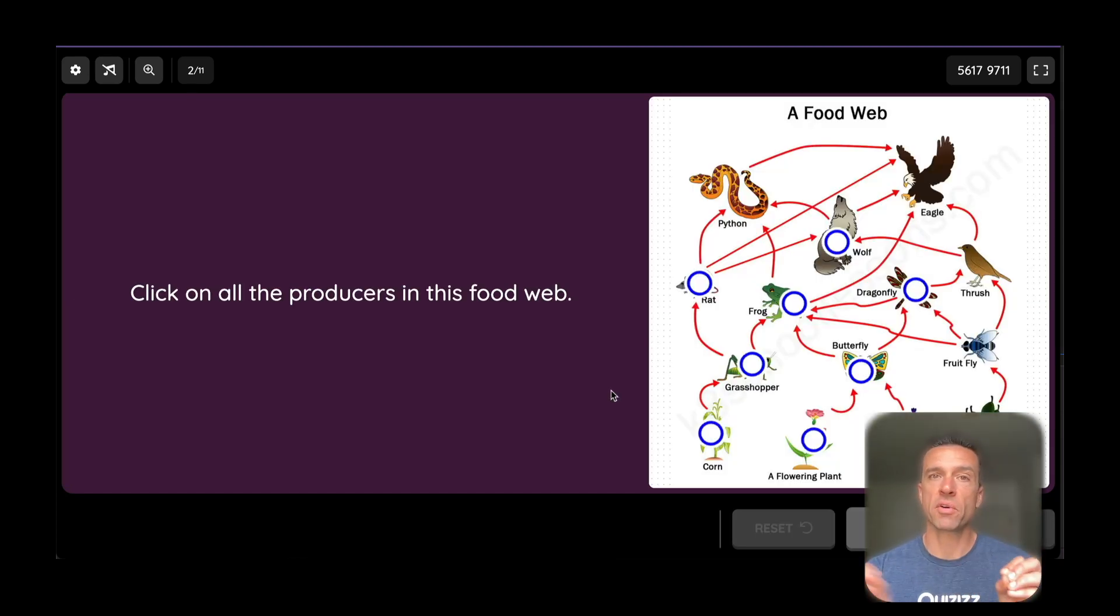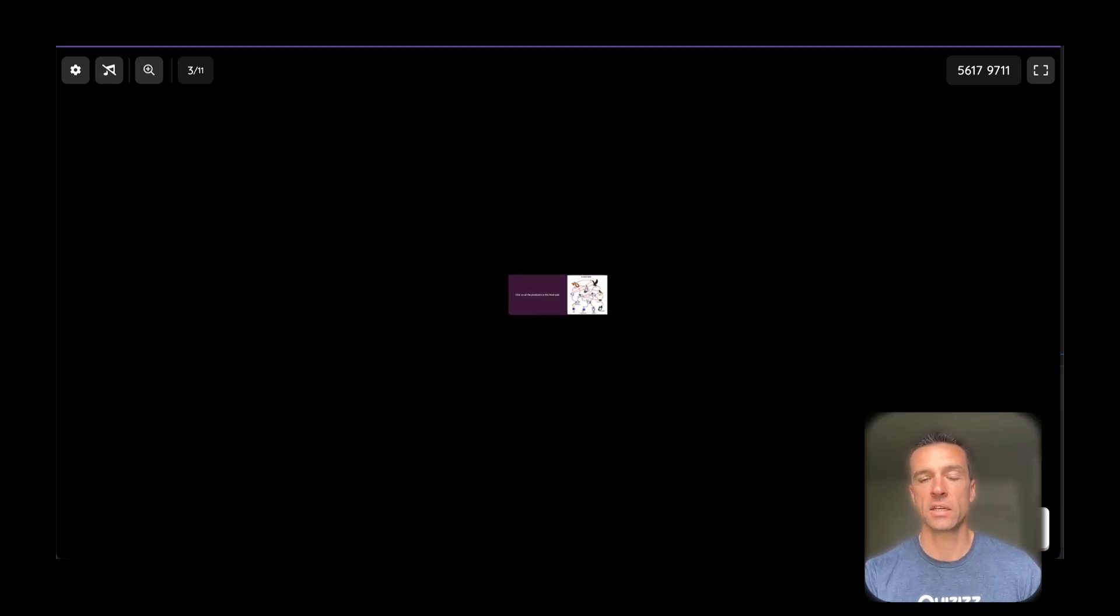So we're going to start off here. I put a couple of the hotspot questions together and labeling questions so you can really see how you can use images for science class. So this was a teacher who was using our hotspot question to pick all the different producers in a food web.